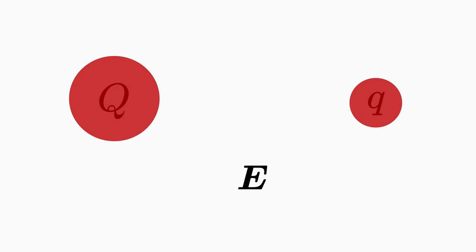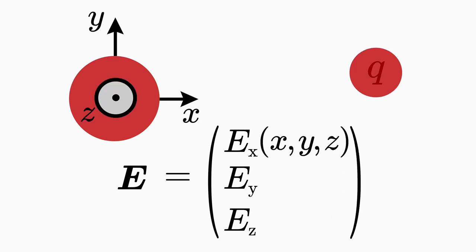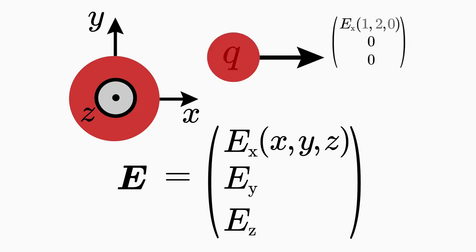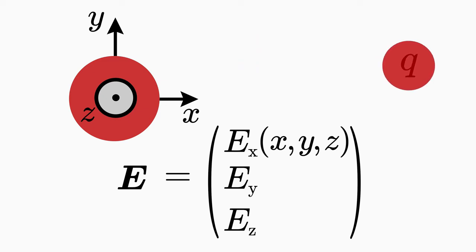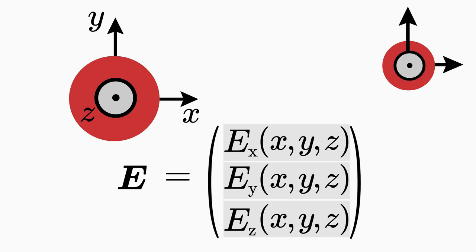The electric field E, as a vector in three-dimensional space, has three components: Ex, Ey, and Ez. The first component depends on the space coordinates x, y, z and it is the magnitude of the electric field in the x direction. Depending on which concrete location is used for x, y, z, the value Ex is different. The same applies to Ey, which indicates the magnitude in the y direction, and Ez, which indicates the magnitude in the z direction. The components of the electric field thus indicate which electric force would act on a test charge at a specific location in the first, second, or third spatial direction.